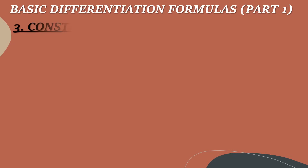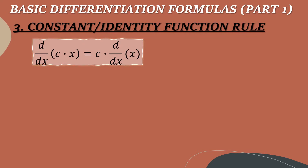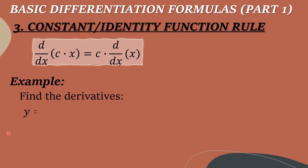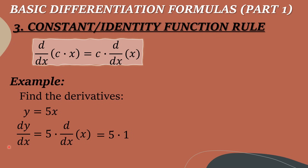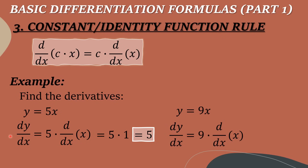The third rule is the constant identity function rule — a combination of the constant rule and identity function rule. For example, find the derivative of Y equals 5X. Here, 5 is the constant and X is the variable. So dy/dx equals 5 times the derivative of X with respect to X. Since the derivative of X is 1, the result is 5 times 1, which equals 5. Another example: Y equals 9X. So dy/dx equals 9 times the derivative of X with respect to X. Since the derivative of X is 1, 9 times 1 gives a final answer of 9.